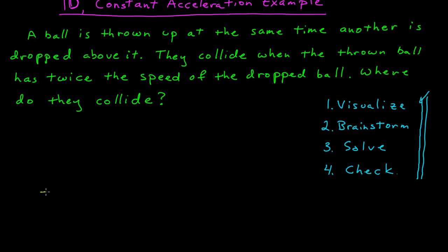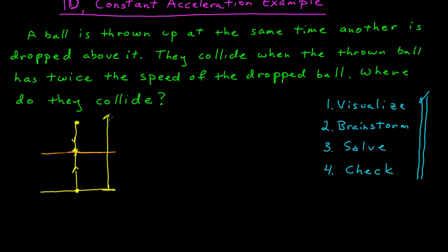The first step is to clearly visualize what's going on. I have some ball that's up high, another one that's low. This one is going to be thrown up, this one's going to be dropped, and then somewhere in the middle they're going to collide. As part of this visualization, I want a schematic, and schematics almost always have coordinate systems.